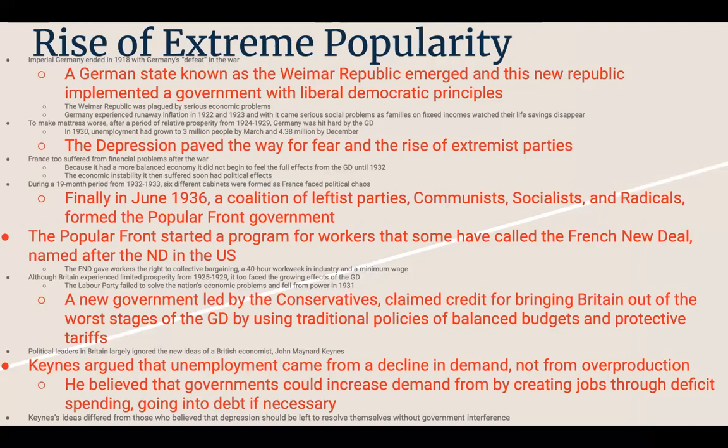Imperial Germany ended in 1918 with Germany's defeat in the war. A German state known as the Weimar Republic emerged, implementing a government with liberal democratic principles. However, the Weimar Republic was plagued by serious economic problems. Germany experienced runaway inflation in 1922 and 1923, and families on fixed incomes watched their life savings disappear. After a period of relative prosperity from 1924 to 1929, Germany was again hit hard by the Great Depression. By March 1930 unemployment had grown to three million, and by December it reached 4.38 million. This depression paved the way for fear and the rise of extremist parties.